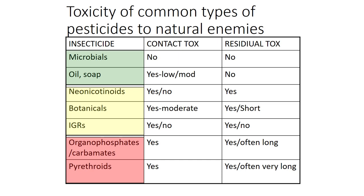The yellow or caution category includes the neonicotinoids, botanicals, and insect growth regulators. The contact toxicity varies depending on the natural enemy. Neonicotinoids are very toxic to honeybees. The residual toxicity varies based on the product. The red or broad-spectrum pesticides such as organophosphates, carbamates, and pyrethroids have both contact and residual toxicity to both pests and natural enemies and may last in the environment for a longer period.